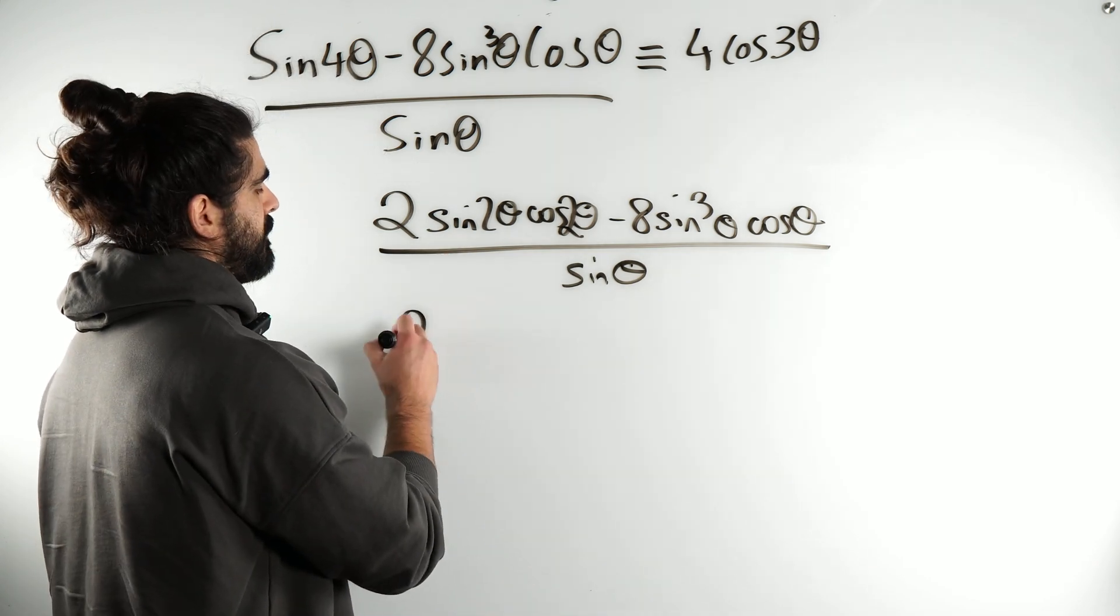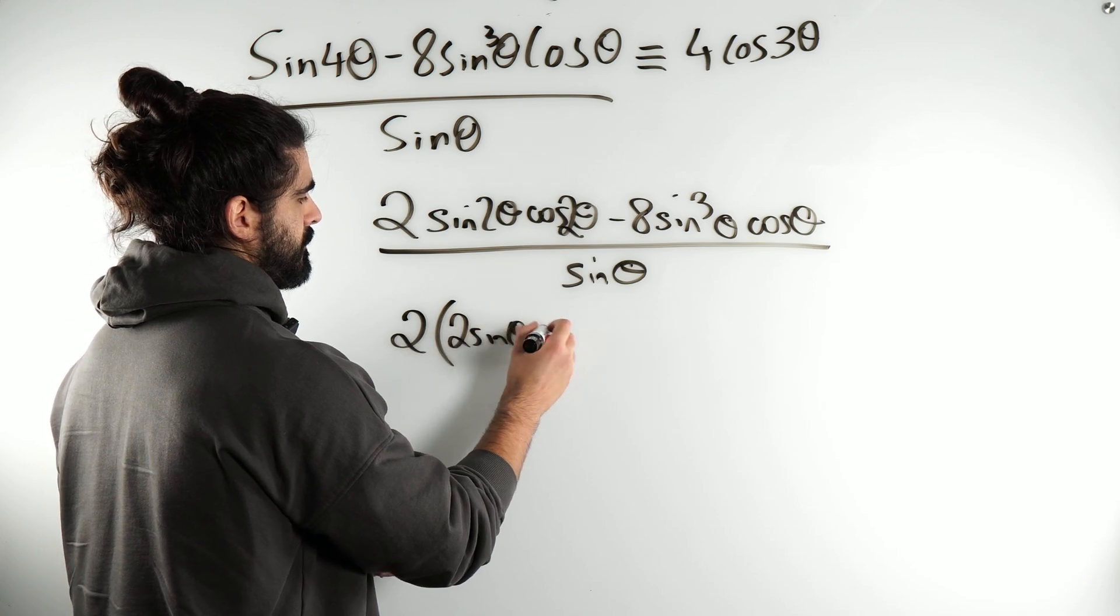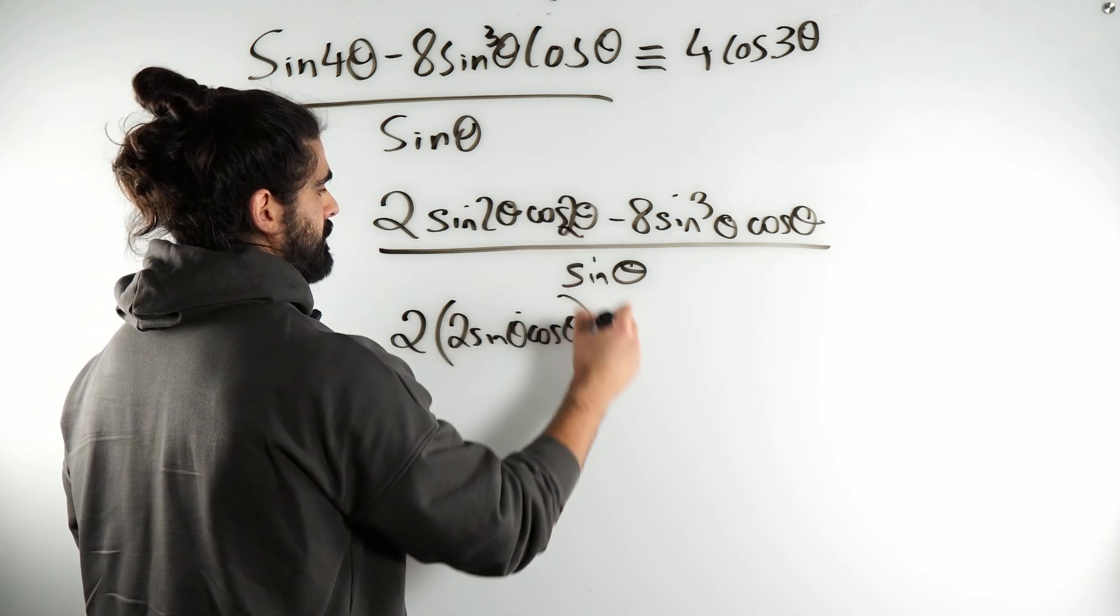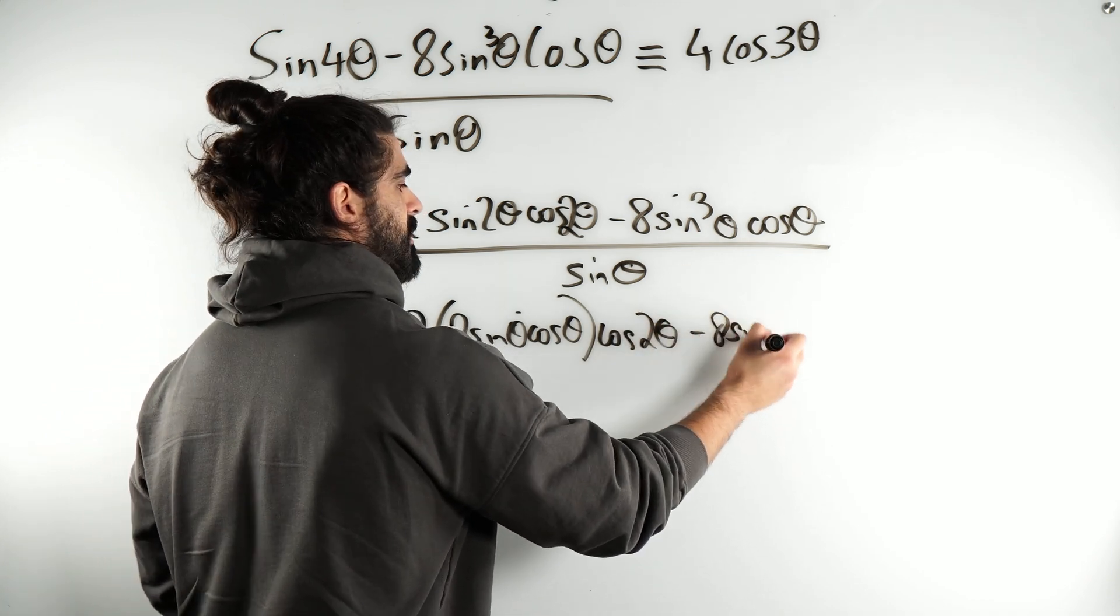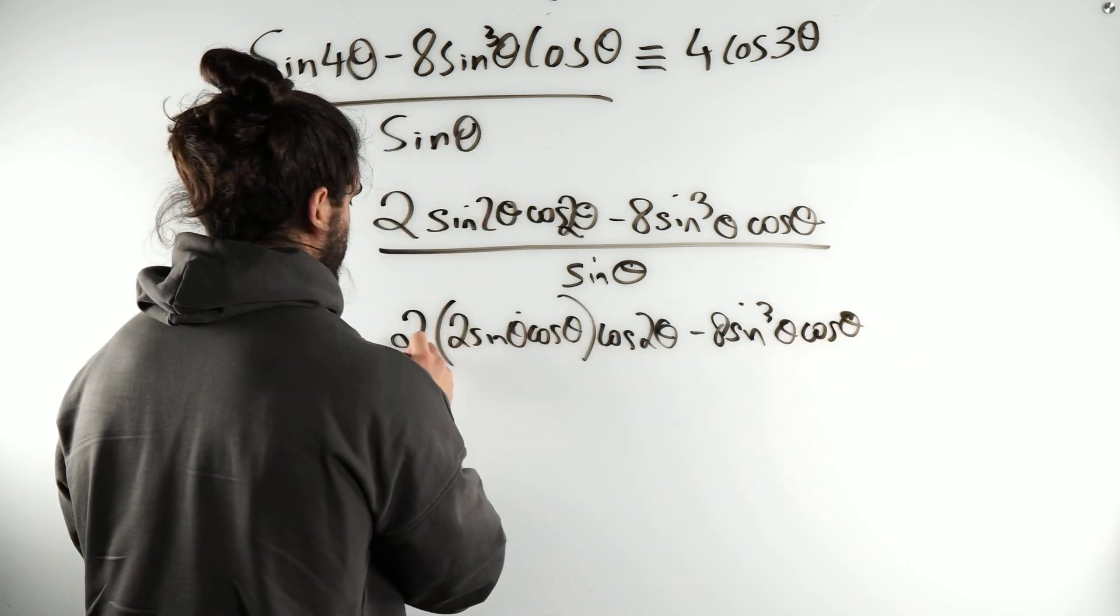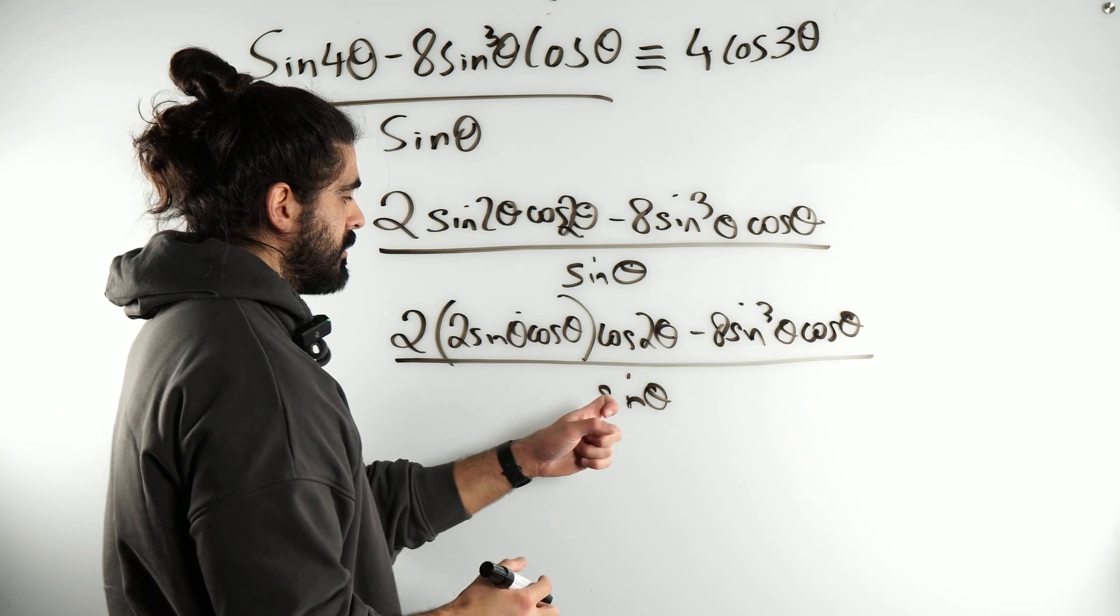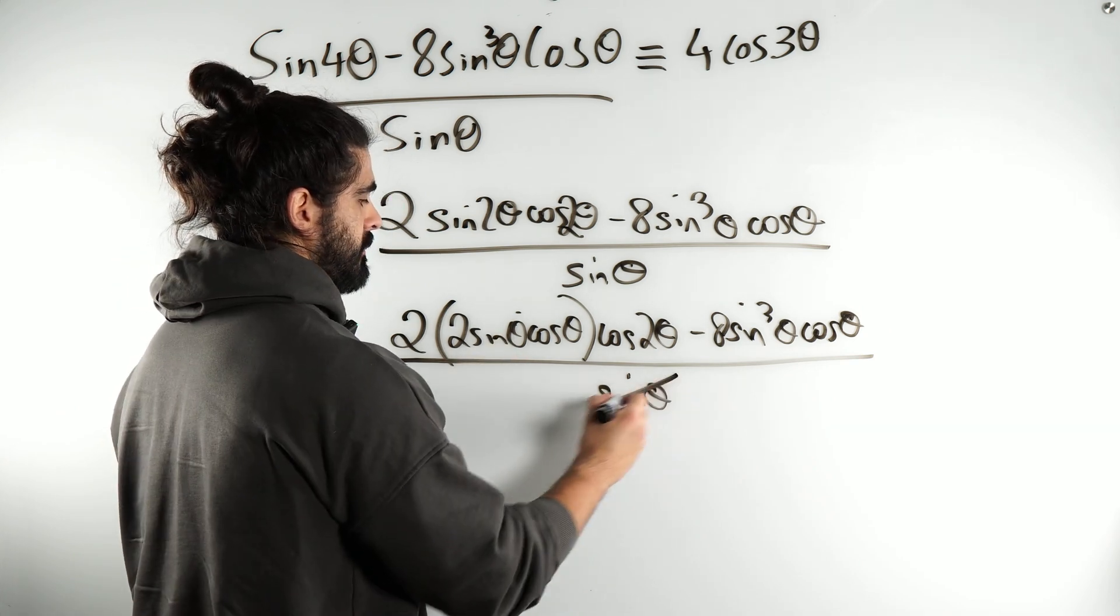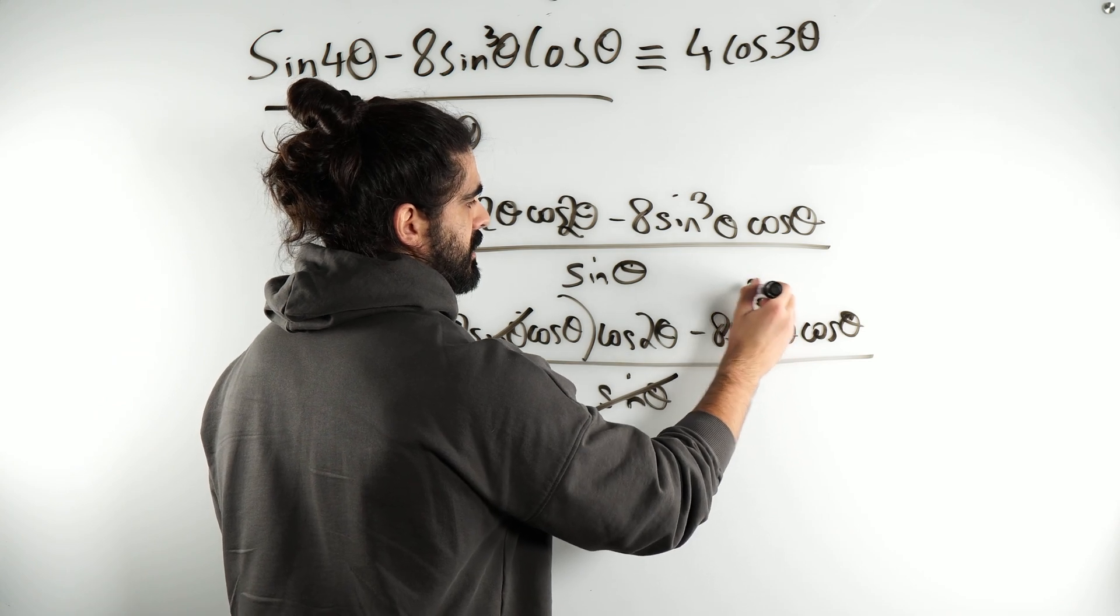So, here we have 2, then sine 2 theta is 2 sine theta cos theta times cos 2 theta minus 8 sine 3 theta or sine cubed theta cos theta all over sine theta. Now, this sine theta cancels with this one and it will cancel with this one to make squared.